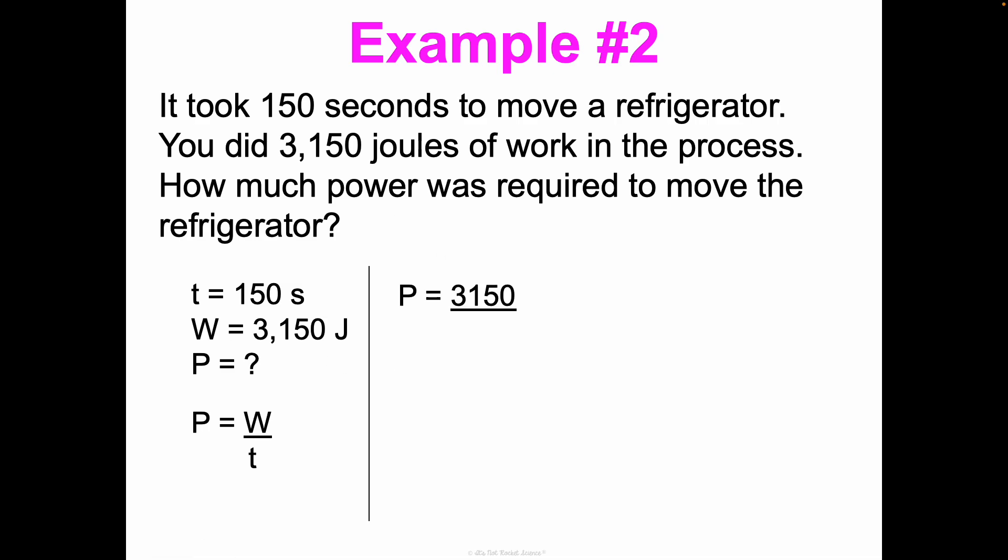Now we plug it in. P equals work, which is 3,150, divided by time, which is 150. When you plug that into your calculator, you get power equals 21 joules per second. Or you could say 21 watts. Would be totally fine. And we're good on sig figs and all of that.